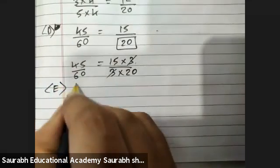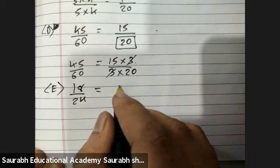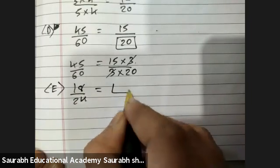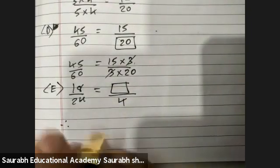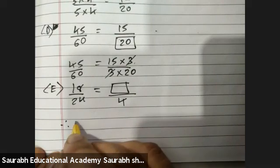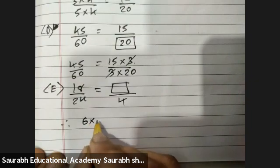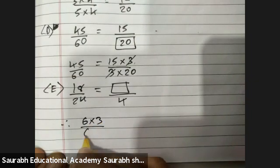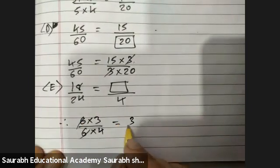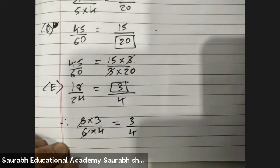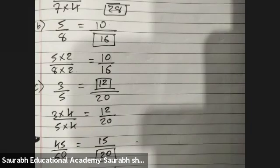Last one: eighteen upon twenty-four equals blank by four. Six threes are 6, four sixes are 24. Six cuts, answer is three upon four. So we will write here 3.